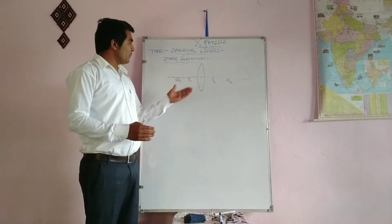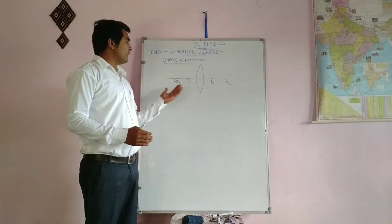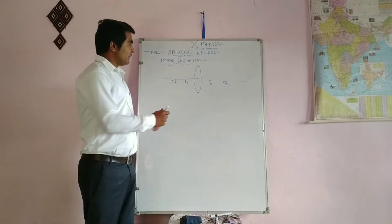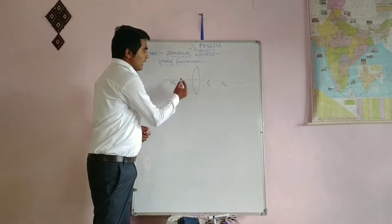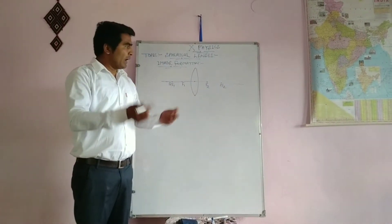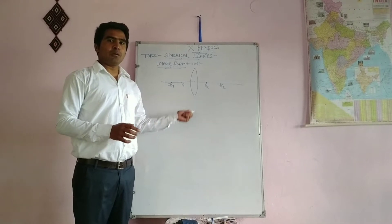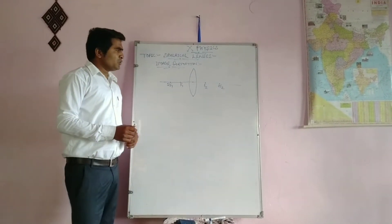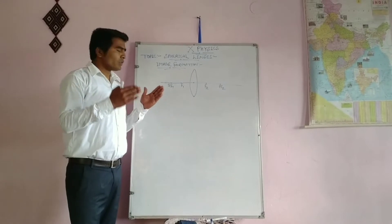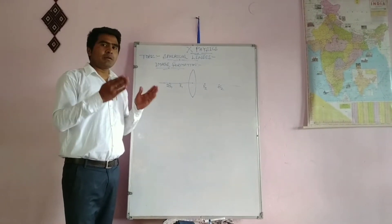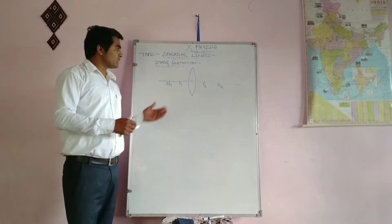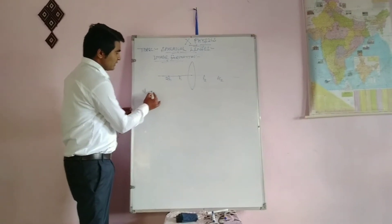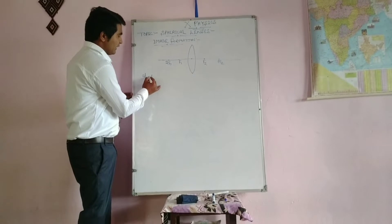We will study what happens when we put our object at infinite, beyond 2F1, at 2F1, between F1 and 2F1, and at F1 — where will the image form by convex or concave lenses? First we will find the position of the object.